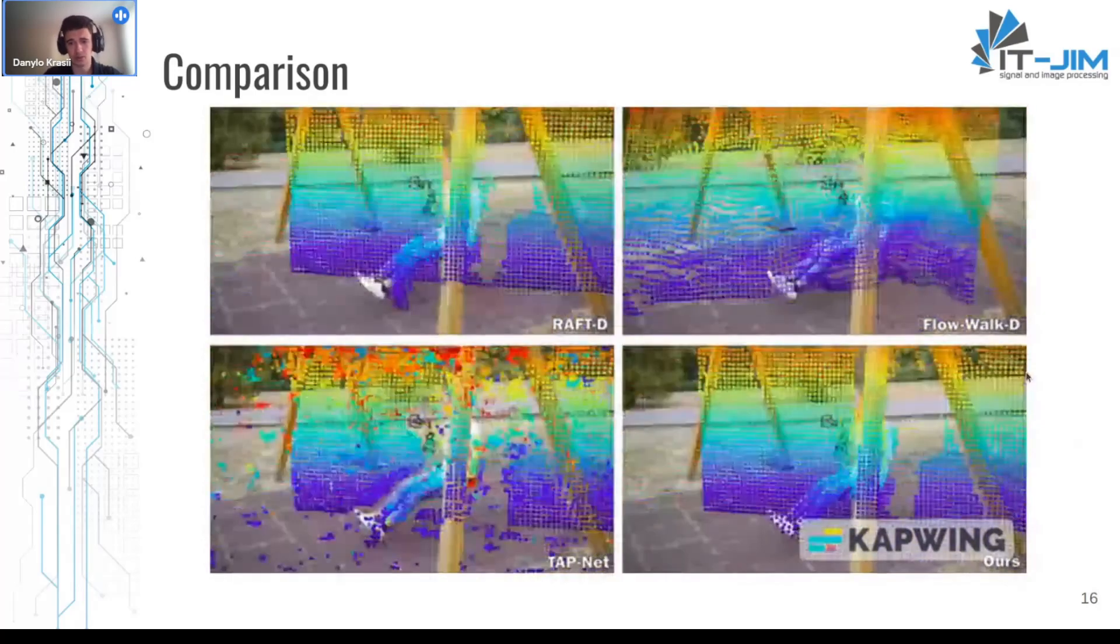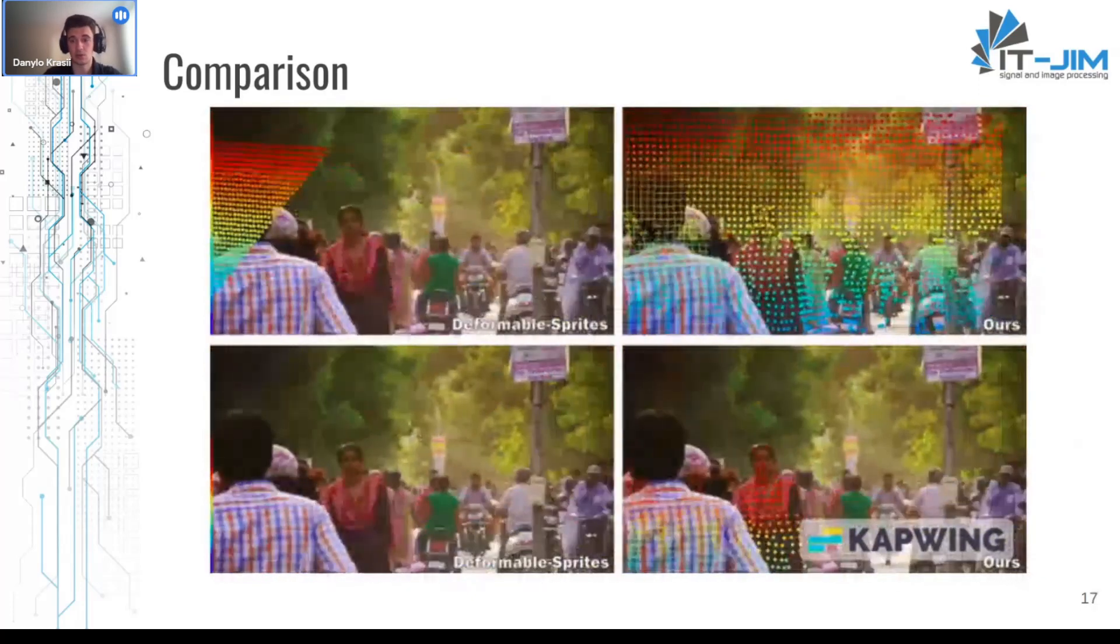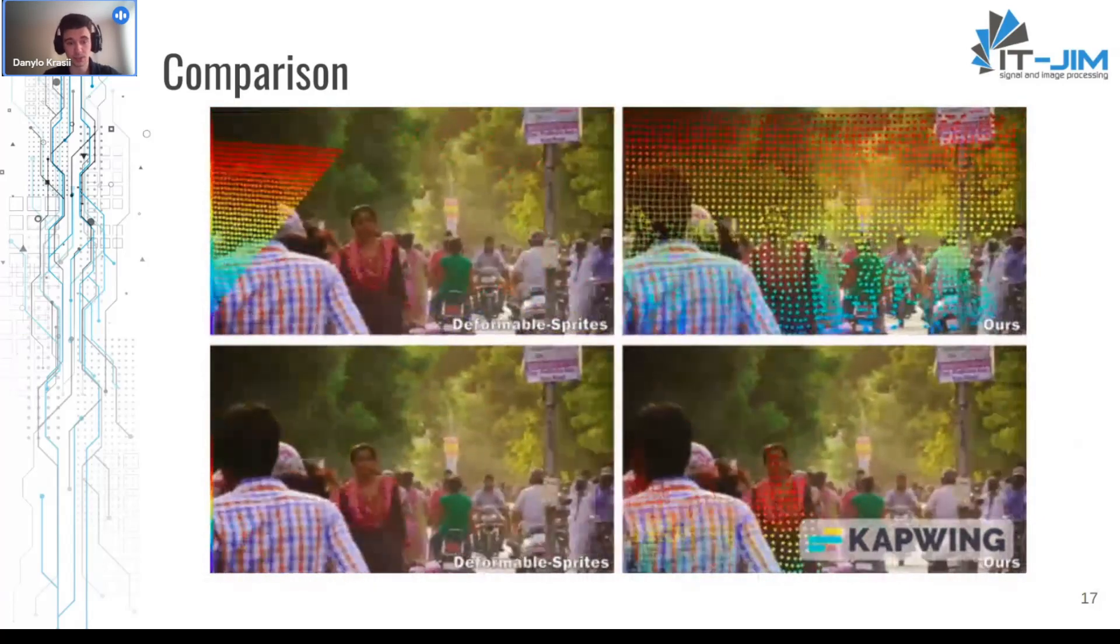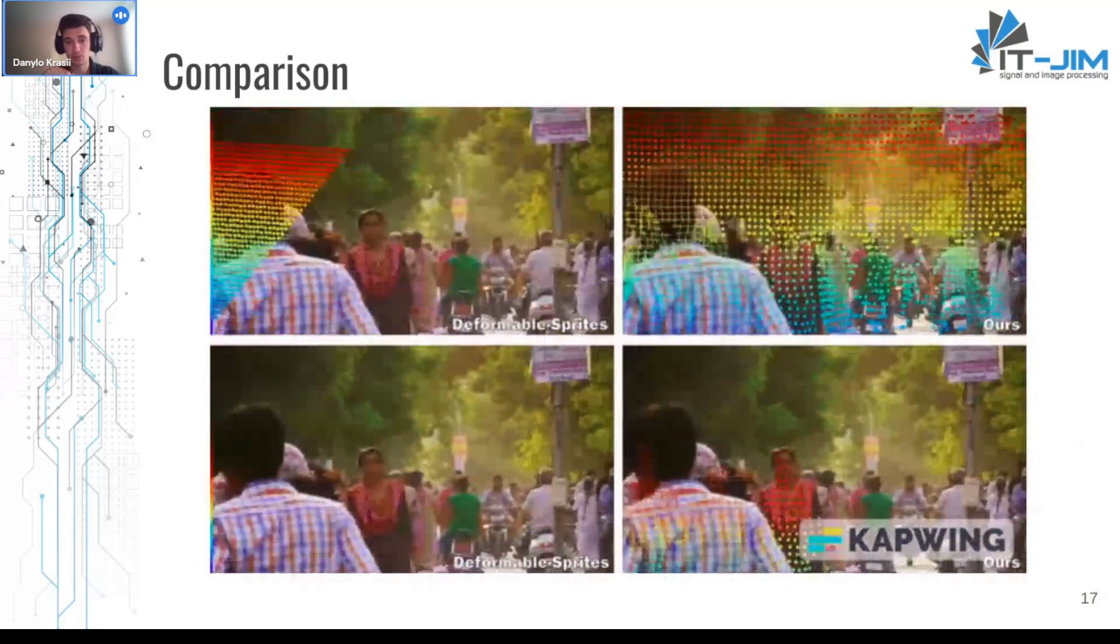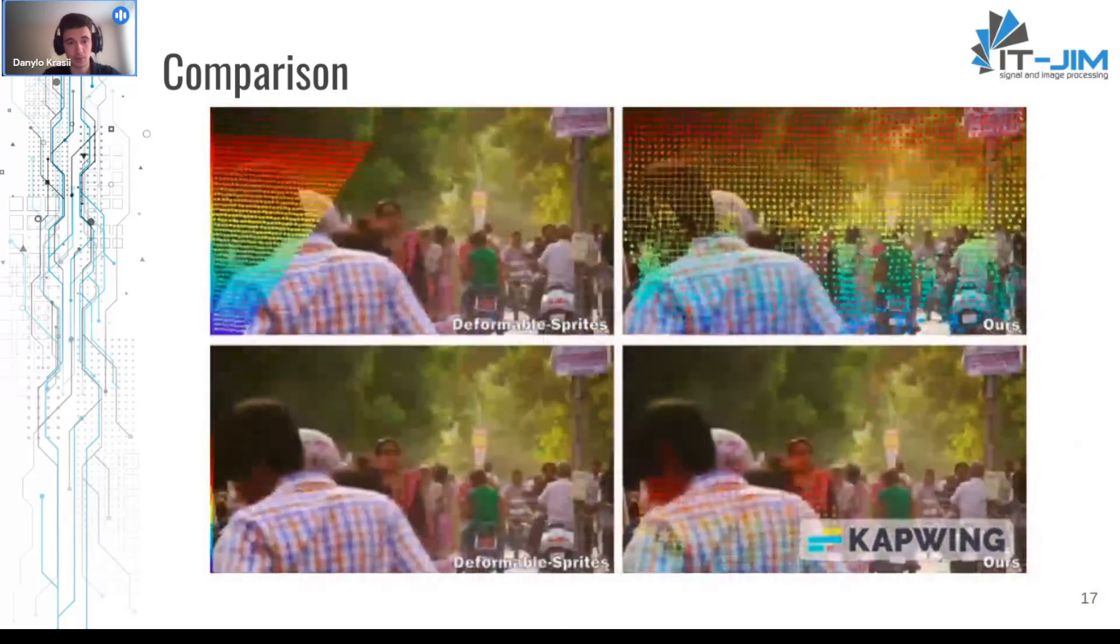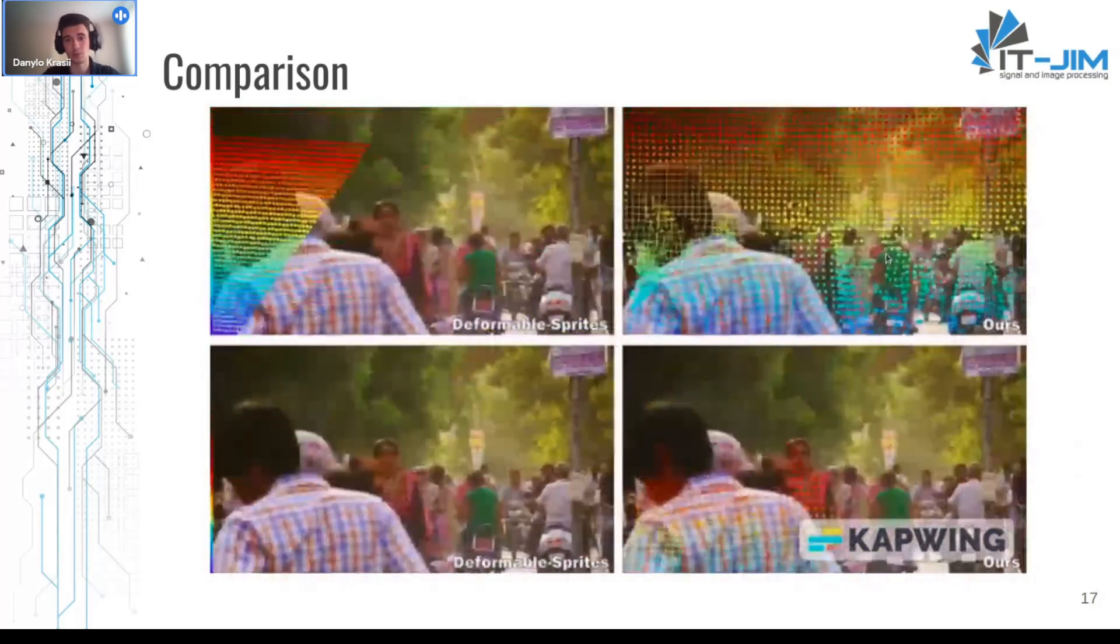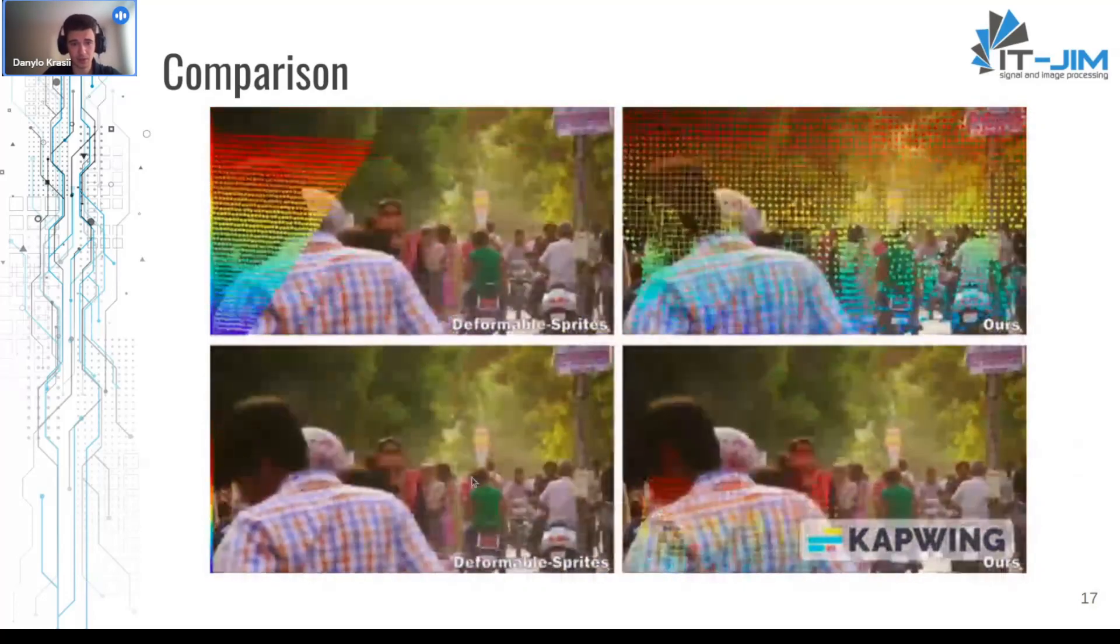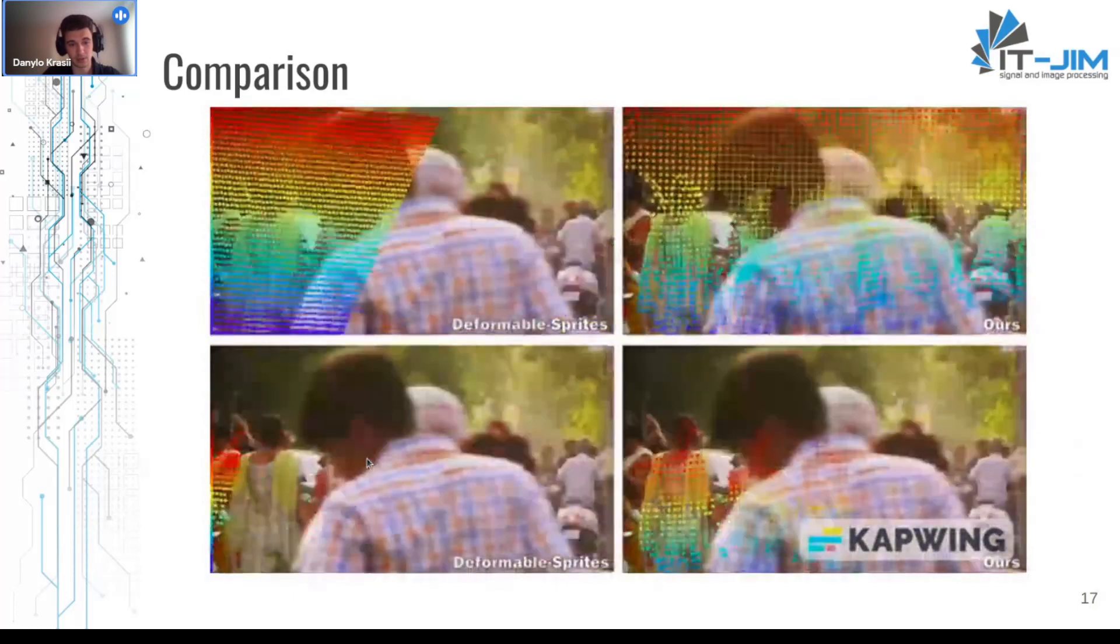Another comparison with RAFT-d, FlowWalk-d and TAPNet. Again OmniMotion shows the best results. And also comparisons of OmniMotion with Deformable Sprites. Deformable Sprites is a layer based video decomposition method that like OmniMotion used per video test time optimization. So those approaches have some similarities in the pipeline but not in results. We can again see that OmniMotion handles camera motions pretty good. It handles occlusions nice too while Deformable Sprites fails on the moment of camera zoom and then failed completely on occlusions.